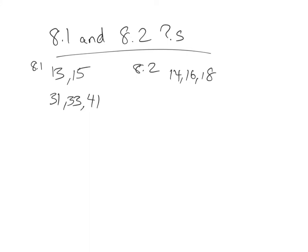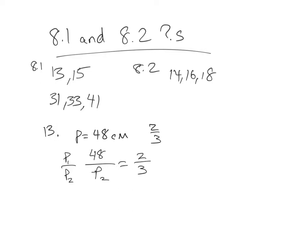Welcome to your e-learning answers. Let's start with section 8.1, numbers 13 and 15, then 31 to 41. Number 13: two polygons are similar, the perimeters are given, find the perimeter of the other polygon. One perimeter is 48 centimeters and the ratio is 2 to 3. Set the perimeter equal to the ratios and solve — cross multiply: 48 times 3 is 144, equal to 2 times the perimeter of the second figure. Divide by 2 and you get 72 centimeters.